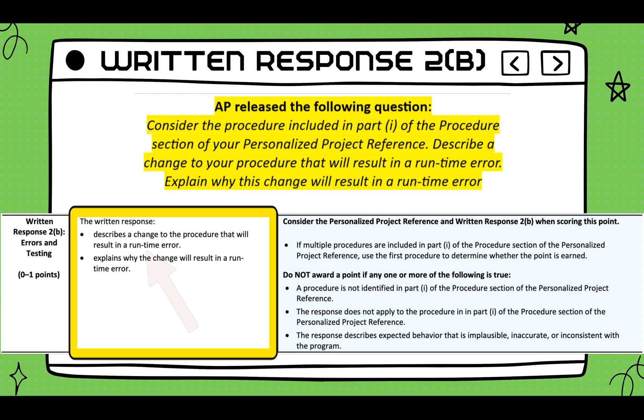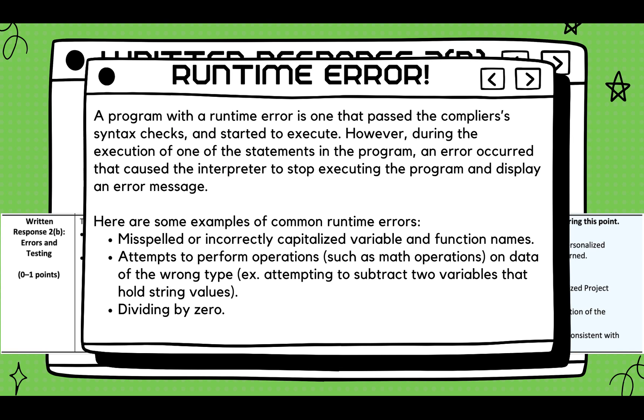Take note, the scoring criteria says runtime error. Do not confuse this with a compiler error. This deals with your list and function. Runtime errors occur during program execution due to unexpected conditions, while compile errors occur during compiling due to syntax or reference issues within the code.